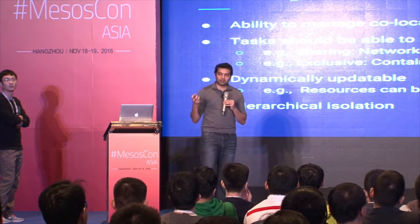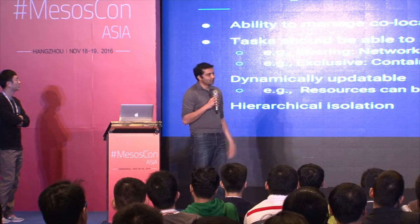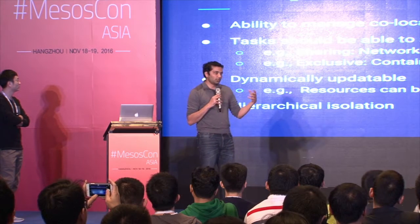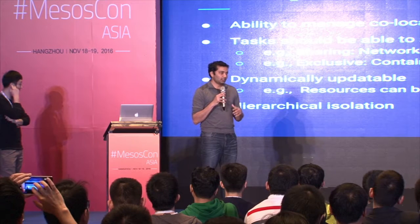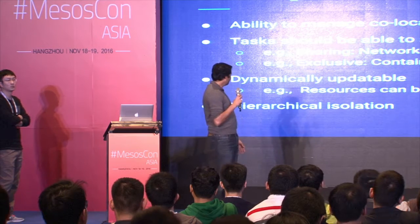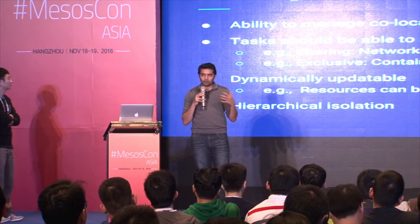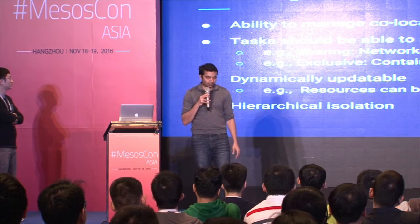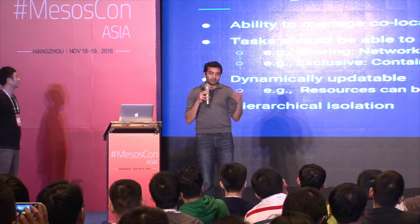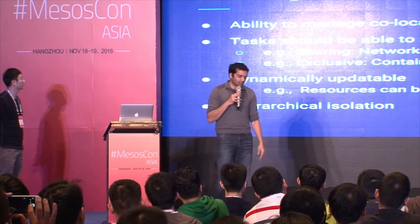These limitations aren't helping some of the use cases we wanted to solve. So we wanted to come up with a new primitive — a Mesos pod — that addresses these limitations. The idea is simple: a primitive that lets us co-schedule and co-manage a group of containers as a single atomic unit. We wanted these containers or tasks to be able to share some resources, like network or volumes, for easy coordination, but not share other resources like their images, since different tasks may need different images.